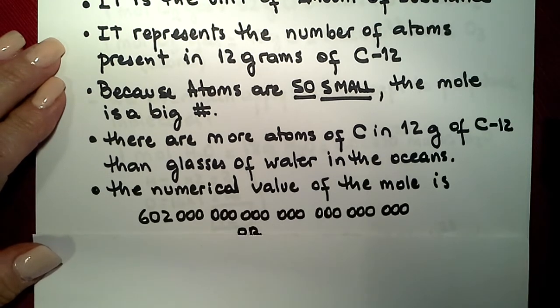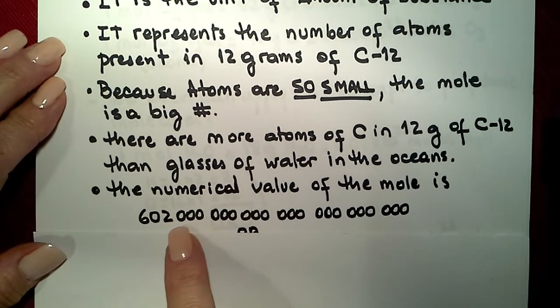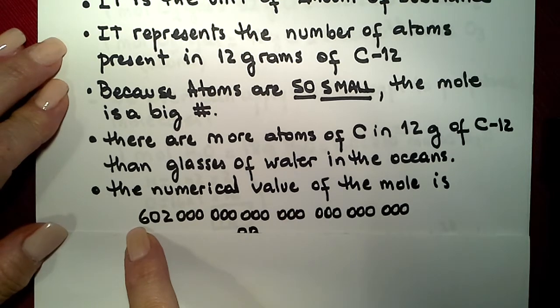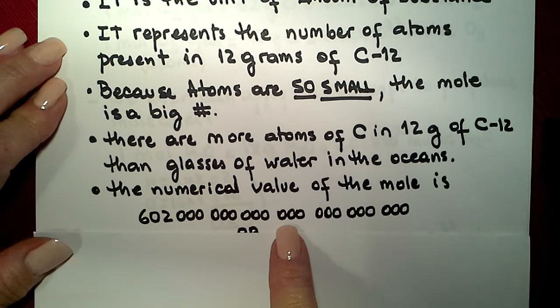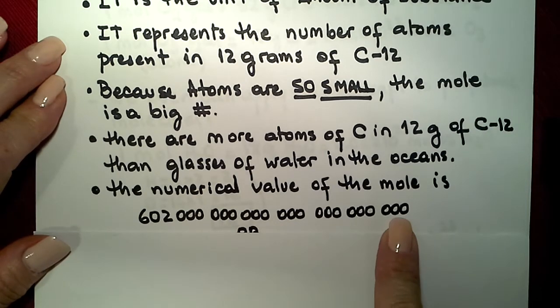The numerical value is 6.02 with some other decimals, but we don't care about those decimals right now. It's just a concept that I want you to grab. It's 6.02 and followed by seven sets of three zeros.